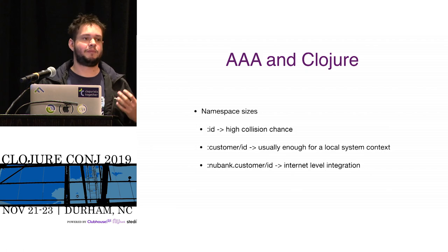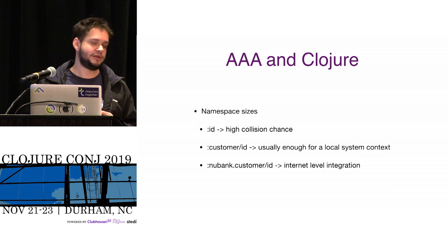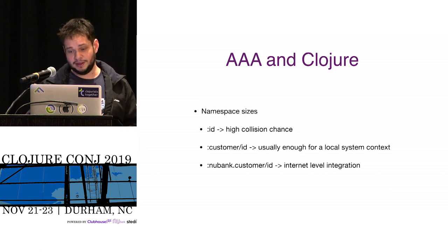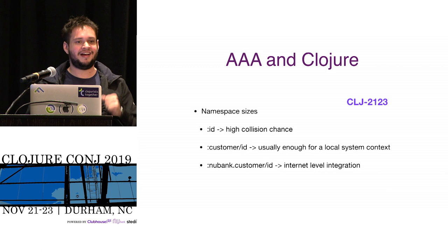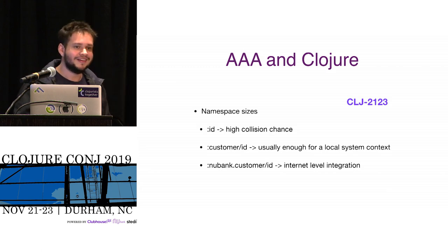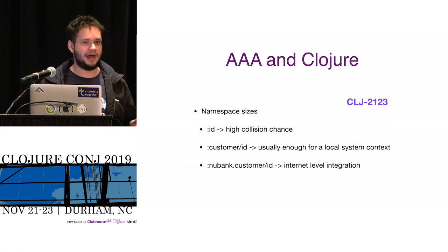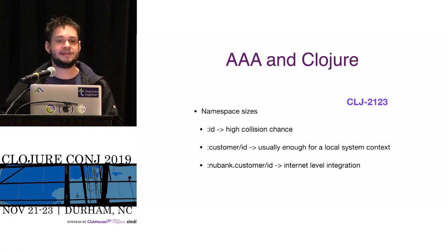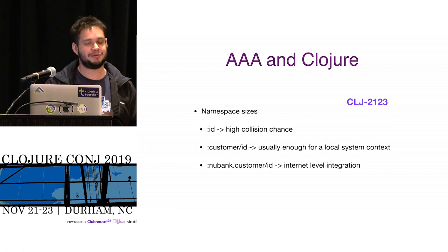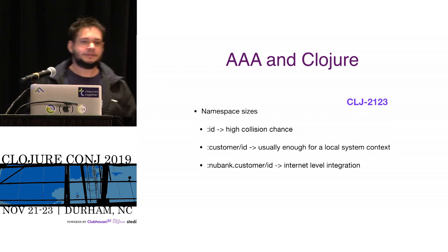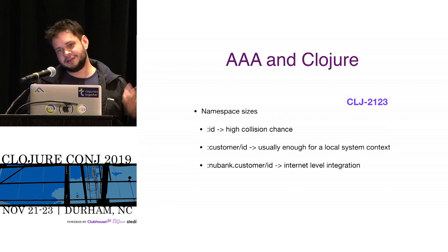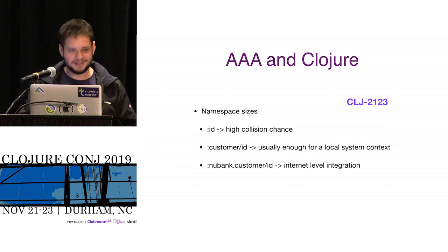Think about that when you model your properties, if you want them to talk to the world — as bigger the name gets, the less chance of collision. I really look forward to a Clojure Jira issue CLJ-2123, about having a lightweight way to name properties. I really want to use long names that don't collide, but right now you have to create the namespace to actually alias it. It would be great to have that — if you like the idea, maybe upvote it.